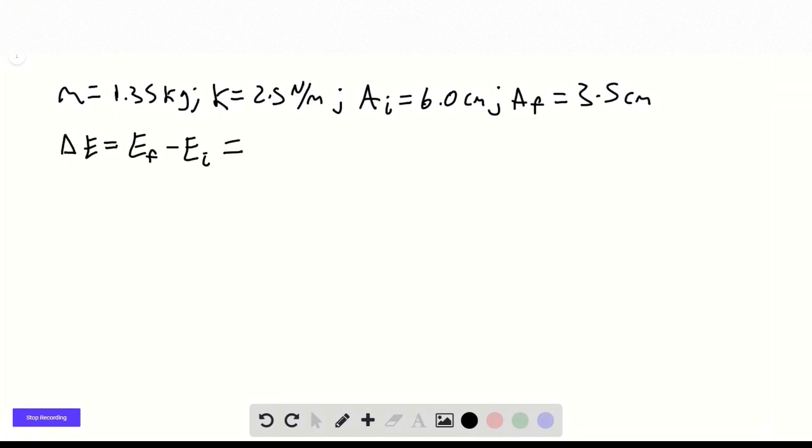Okay, the final energy is 1/2 k A_f squared minus the initial, which is 1/2 k A_i squared. This is the energy of a spring at full amplitude.